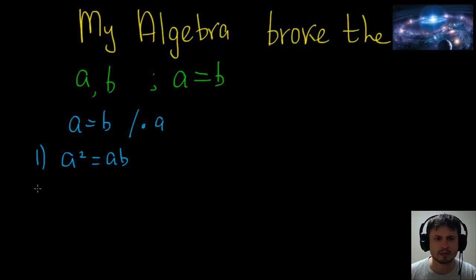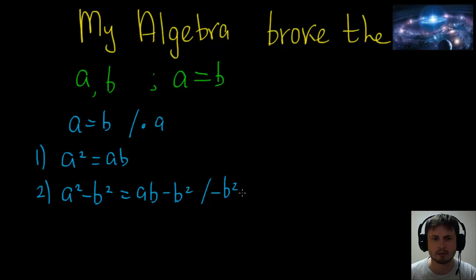Now step number two, let's actually subtract b squared from both sides. So from this side we're going to take a squared minus b squared, and then from this side we're going to take ab minus b squared. So what we did here is we actually subtracted b squared, and we can do that, right? So far so good.